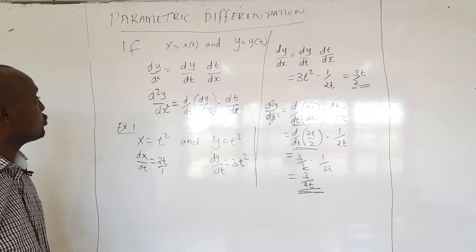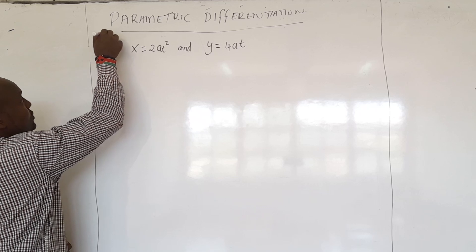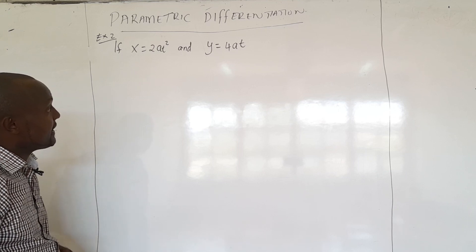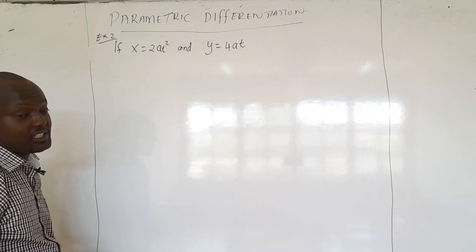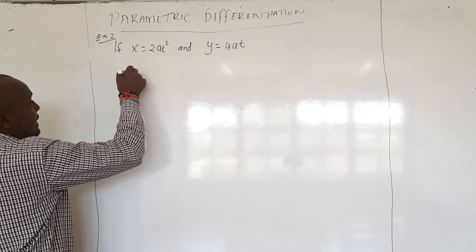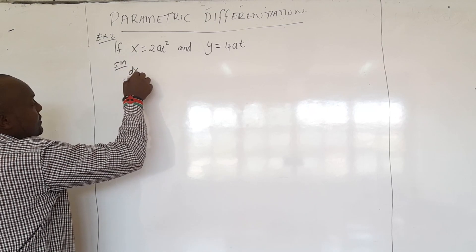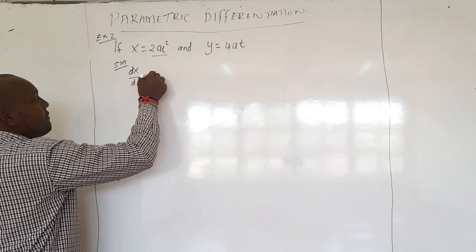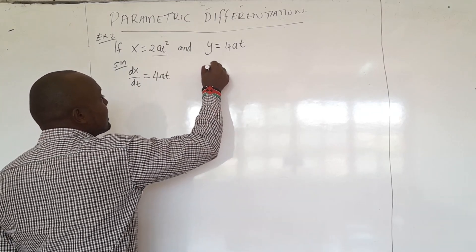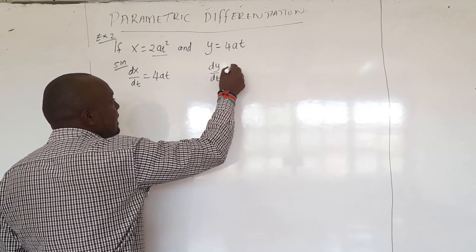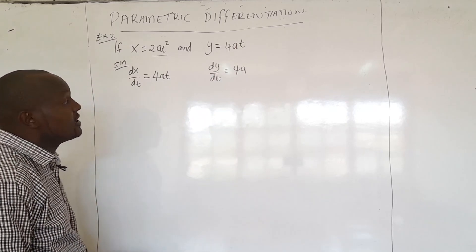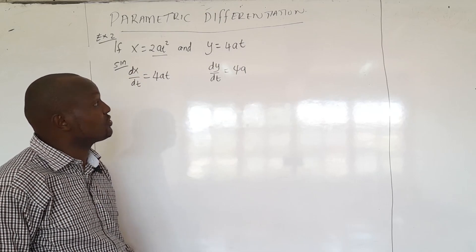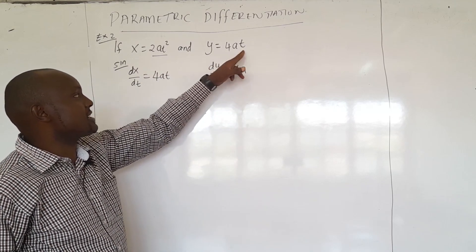Let's look at example two. Here we are given x equals 2at squared and y equals 4at. First, differentiate x with respect to T, treating a as a constant, and we get dx/dt equals 4at. Now differentiate y with respect to T: differentiating 4at gives dy/dt equals 4a, since a is constant — just as differentiating 2t gives 2 and 3t gives 3.